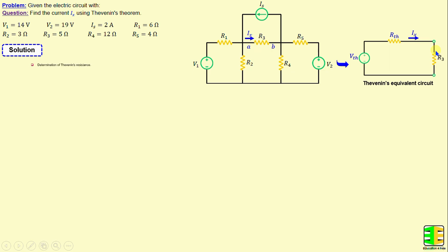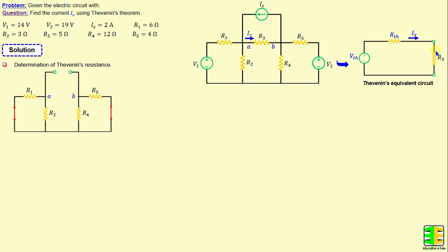I will start first with the determination of Thevenin's resistance. This step can be done by disconnecting R3 and removing all independent sources in the circuit, which means the voltage sources will be replaced by a short circuit and the current source will be replaced by an open circuit. The Thevenin's resistance represents the equivalent resistance between terminals A and B. That means RTH is equal to the parallel combination of R1 and R2 connected in series with the parallel combination of R4 and R5.